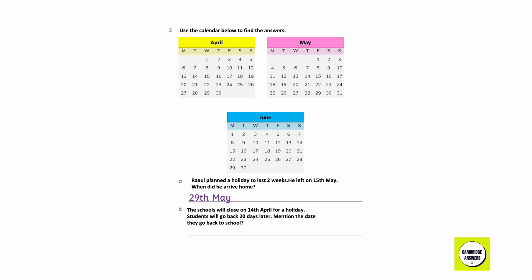Schools will close for a holiday on 14th April. Learners will go back to school 20 days later. What date do they go back to school? Counting 20 days after 14th April, the answer is 4th May.